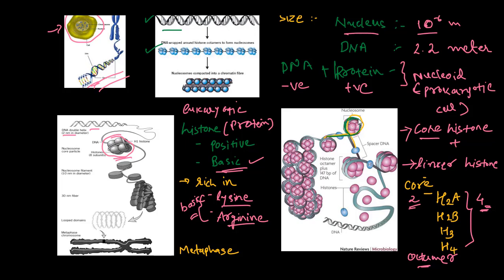Another histone called the linker histone links two histone octamers. This is called linker histone H1. If we calculate the size, the histone octamer has a total of 147 base pairs of DNA wrapped around the histone protein.